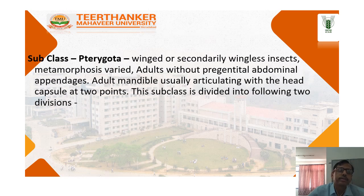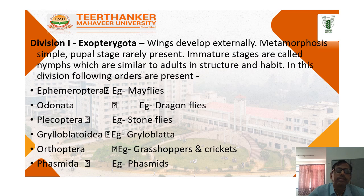The second subclass is Pterygota: winged or secondarily wingless insects. Metamorphosis varied. Adult without pregenital abdominal appendages. Adult mandible usually articulating with the head capsule at two points. This subclass is divided into two divisions. Division one is Exopterygota: wings developed externally, metamorphosis is simple, pupal stage is rarely present, and immature stages are called nymphs, which are similar to adults in structure and habit.